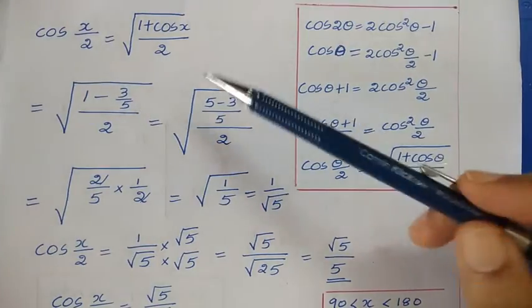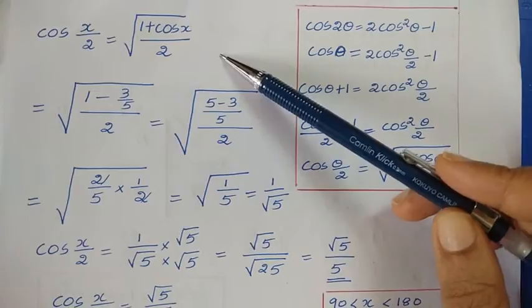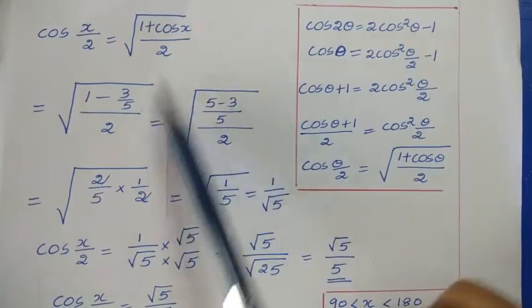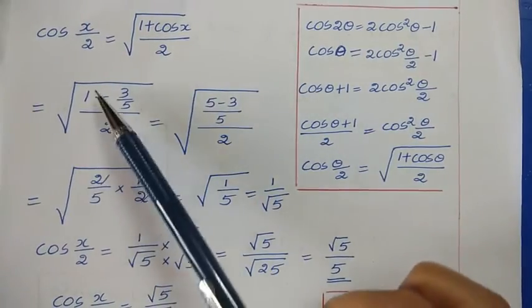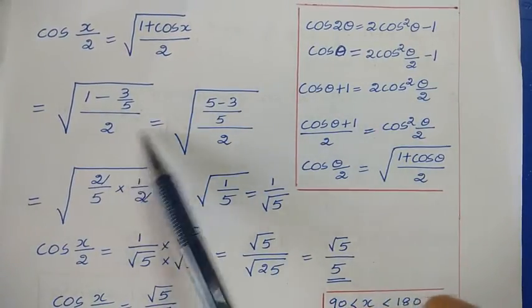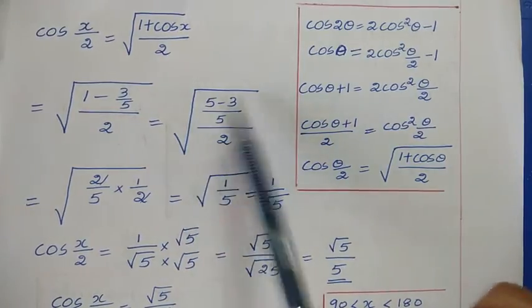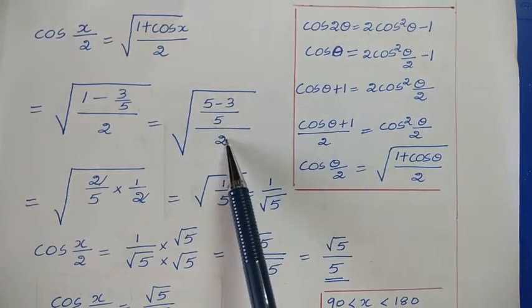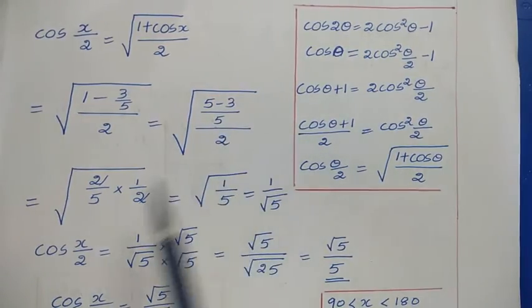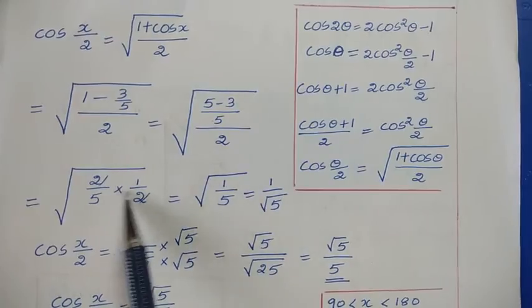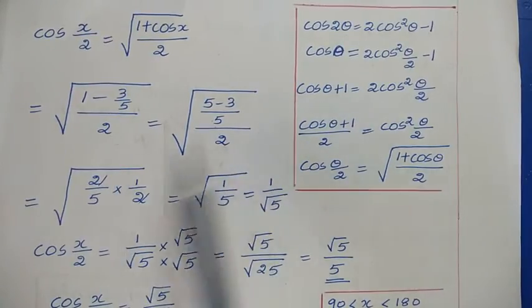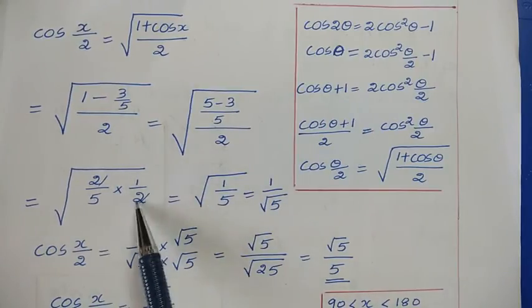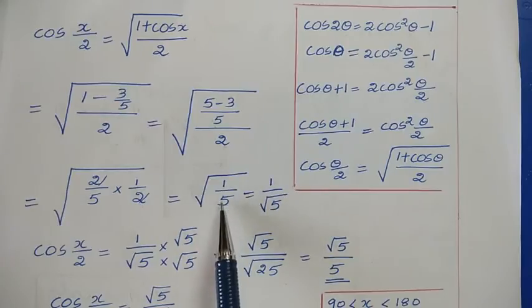Using this formula with cos x = −3/5: cos(x/2) = √((1 + (−3/5))/2) = √((1 − 3/5)/2). Taking common denominator 5: √((2/5)/2). After cross multiplication, 2 cancels, giving √(1/5) = 1/√5.